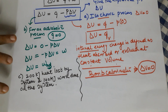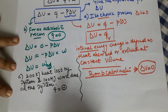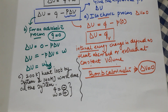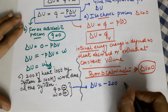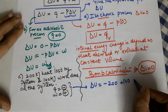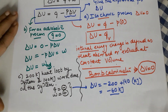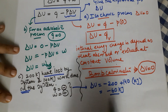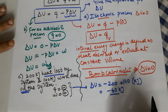For a numerical example: 200 kilojoules of heat is lost by the system (q = −200 kJ) and 140 kilojoules of work is done on the system (w = +140 kJ). Using ΔU = q + w: ΔU = −200 + 140 = −60 kJ. The internal energy change is minus 60 kilojoules — negative because heat was lost, and positive work since it was done on the system.